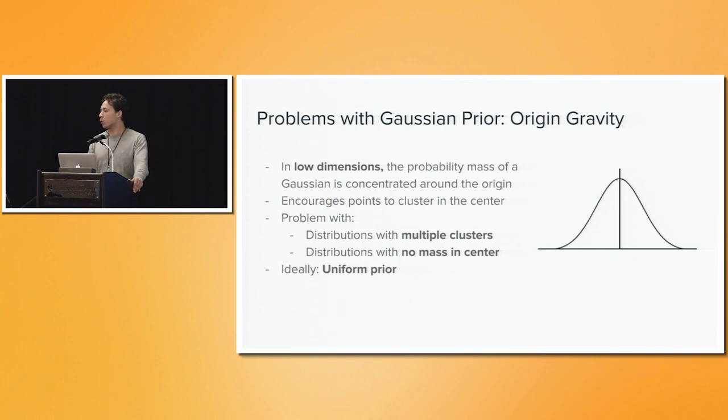So what would we ideally want in this prior? We'd want a uniform prior that doesn't have any sort of mean bias and freely lets points float and only optimize for the variance.